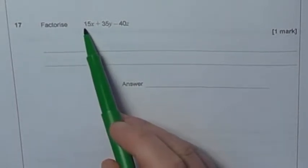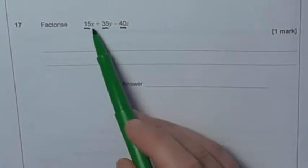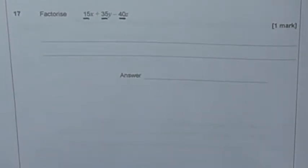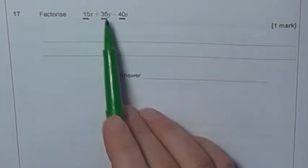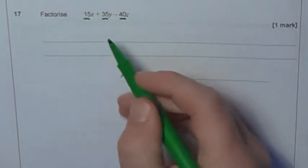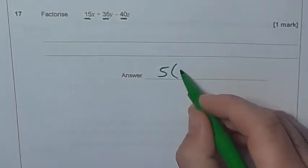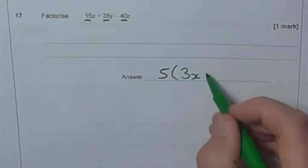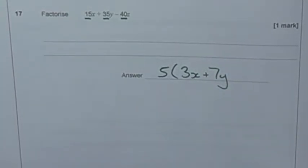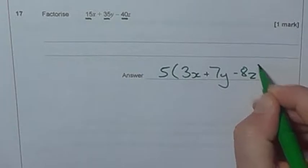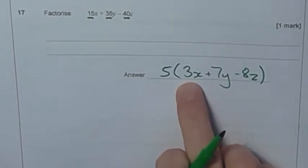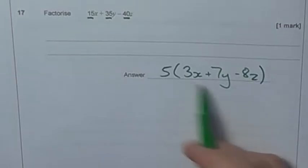Next one, factorising. That's putting things into brackets. So I need to look at the coefficients of the letters. I'm looking for the highest common factor of 15, 35, and 40. They all end in a 5 or a 0, so 5 must go in. I'm going to take 5 as my highest common factor. What do I times 5 by to get 15x? Well, that must be 3x. I times it by 7y to get 35y, and I would times it by minus 8z to get minus 40z. Just check - do 3, 7, and 8 have common factors as well? I've got two primes there, so they can't.